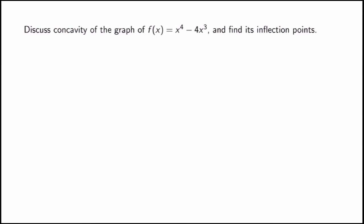Let me put that into practice with a second example. Given the function x⁴ − 4x³, I want to study its concavity, its inflection points, and its local min and max. Starting with concavity, I calculate: f prime = 4x³ − 12x², and f double prime = 12x² − 24x = 12x(x − 2).